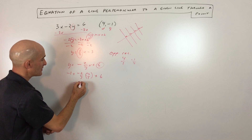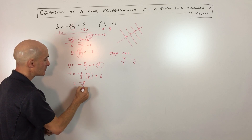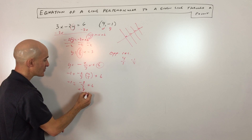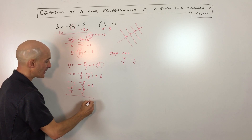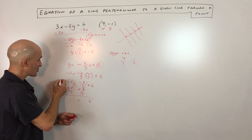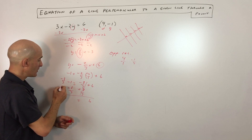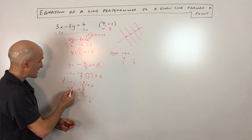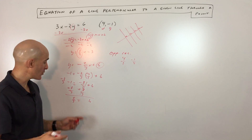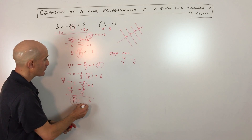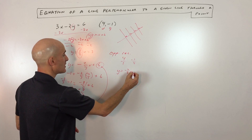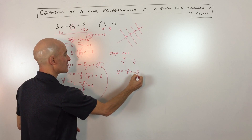Solving for b, we get negative 8 over 3 plus b equals negative 1. We add 8 thirds to both sides — those cancel. Since negative 1 is the same as negative 3 over 3, we get negative 3 plus 8 over 3, which gives us 5 thirds. We put 5 thirds back in for b, and our final equation is y equals negative 2 thirds x plus 5 thirds.